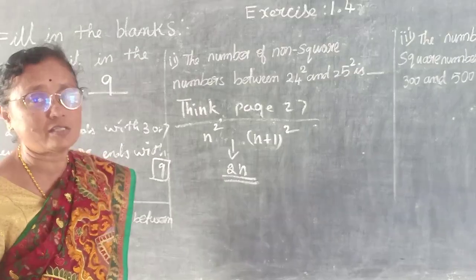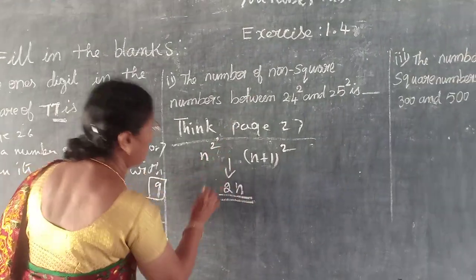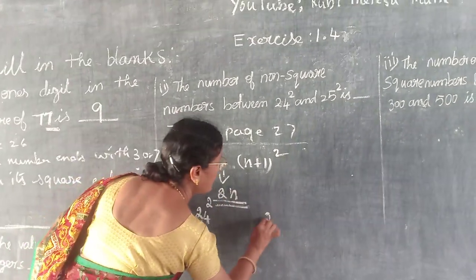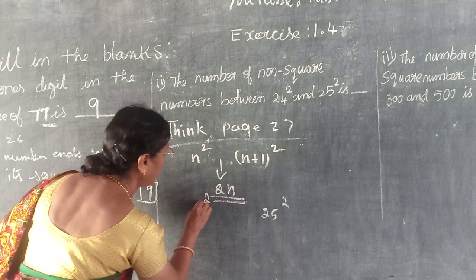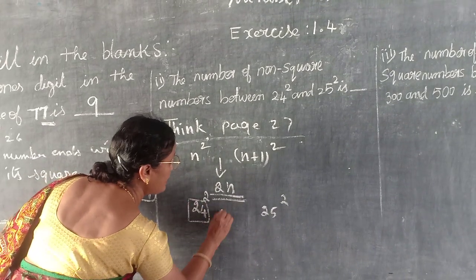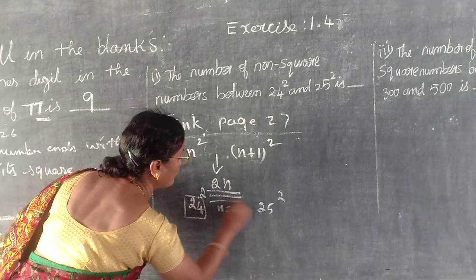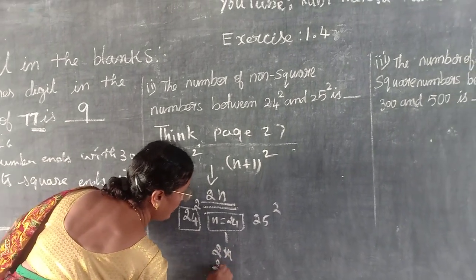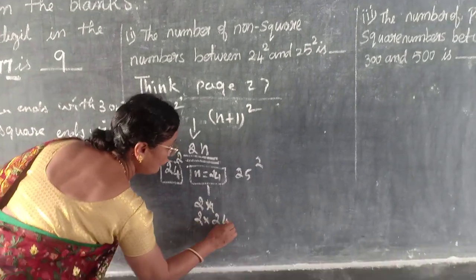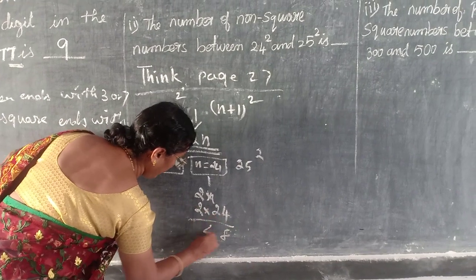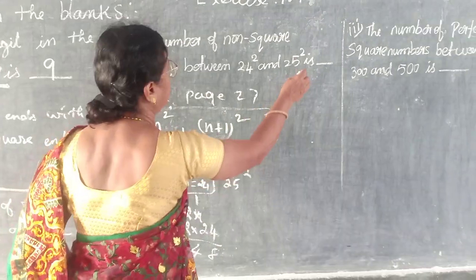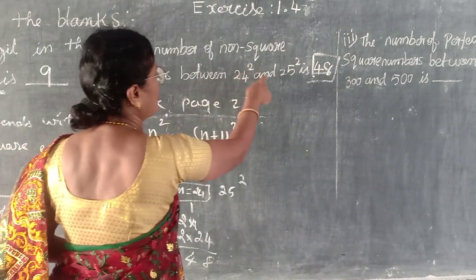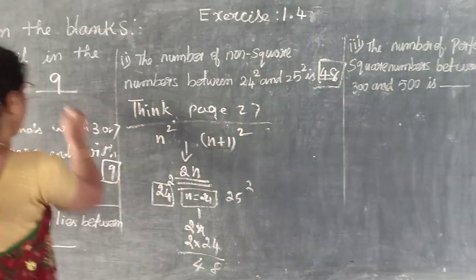Here N is what? 24. So 24 square, and the next one is 25 square. N equals 24, that means 2N equals 2 into 24. 2 fours are 8, 2 twos are 4, so 48. So how many non-square numbers are there between 24² and 25²? 48.